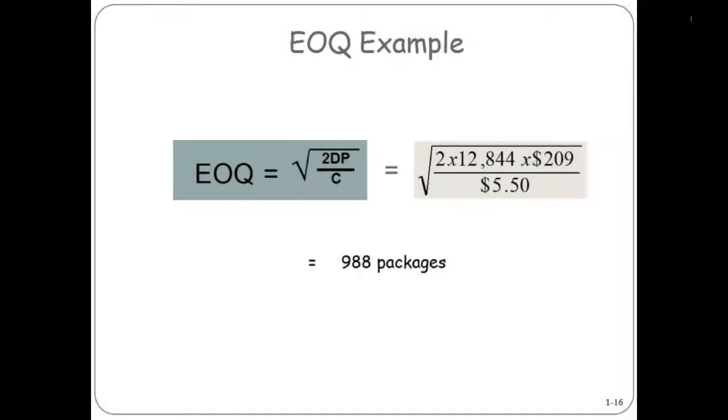This means every time you have an order, you should order 988 video packs to minimize the trade-off costs between your ordering costs and your carrying costs.